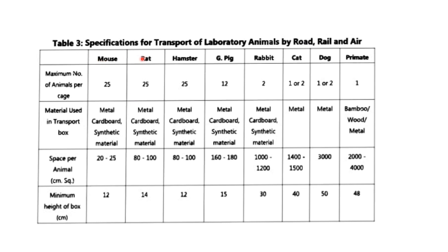The last part covers the specifications for transport of laboratory animals by road, rail, and air. For different animals such as mouse, rat, hamster, guinea pig, rabbit, cat, dog, and primates, specific transport requirements are given. For example, for mice, the maximum number of animals per case should be 25, the transport box material can be metal, cardboard, or synthetic material, the space per animal should be 20 to 25 centimeter square, and the minimum height of the box should be 12 centimeters. These specifications are given by the committee to guide transport from facility to research center.